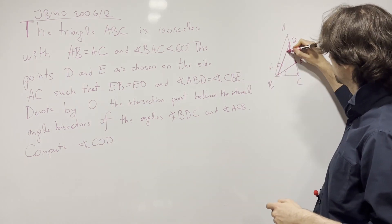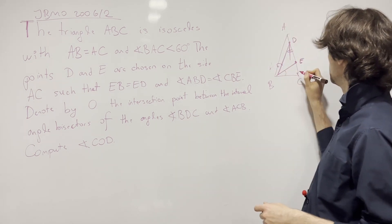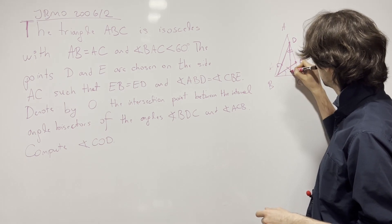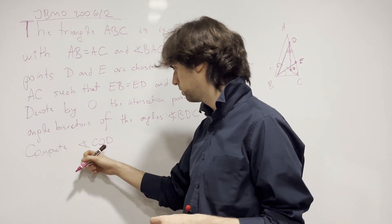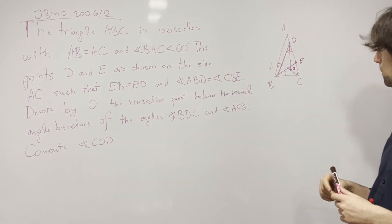And we must have O is the intersection point of the internal angle bisectors of BDC and ACB. So they meet at O and we need to determine angle COD.